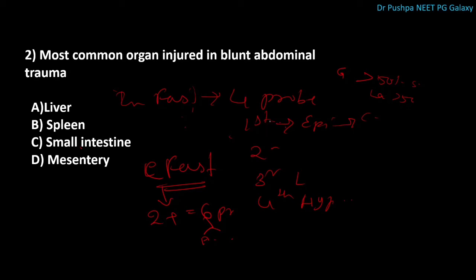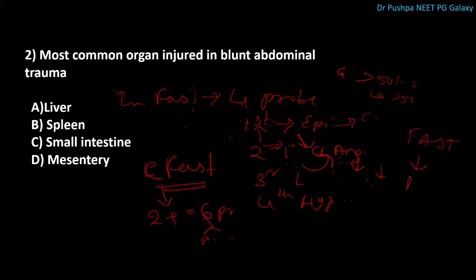Management depends on grade and hemodynamic stability. In grades 1 and 2 with a stable patient, investigation of choice is CECT, followed by conservative management with monitoring of vitals and serial CECT. If not improving, angio-embolization is performed. If bleeding is still not controlled, surgery — spleen-conserving surgery (splenorrhaphy) — is done. In grade 3, if stable: splenorrhaphy; if unstable: splenectomy. In grades 4 and 5, the patient will be unstable, investigation of choice is FAST, and surgery is splenectomy.